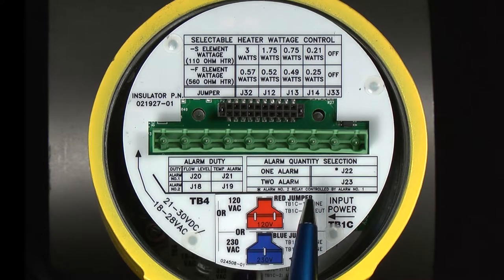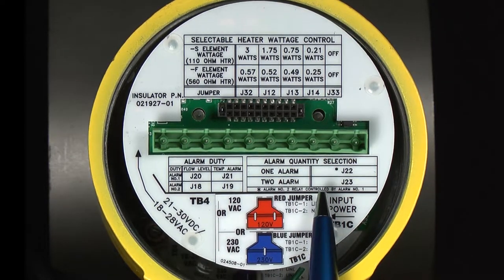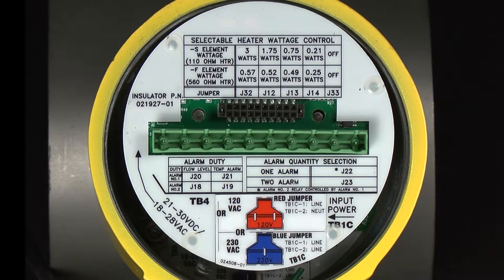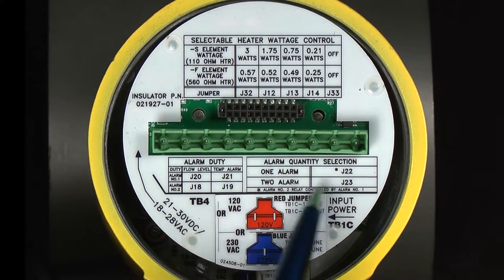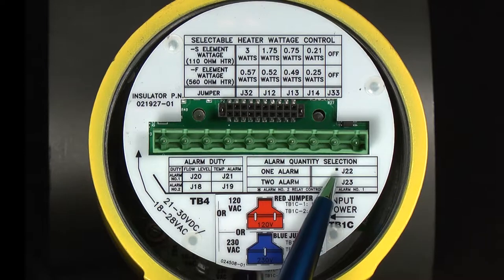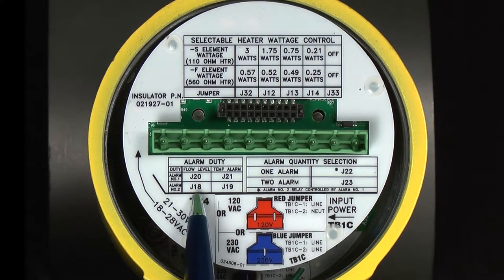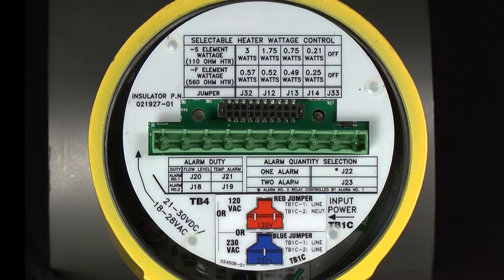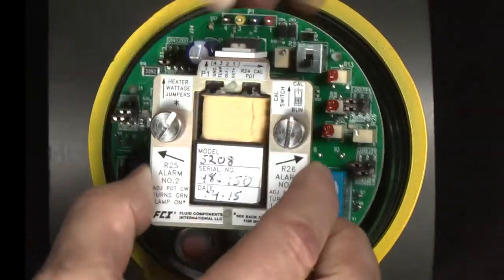The alarm selection, quantity selection section over here, is for determining if you're going to use two alarms or one alarm. There are six amp relays on the circuit board; they're of the form C type, which is the single pole double throw, and they can be set for flow, level, or temperature independent of each other. But if the double pole double throw relay configuration is required, you can use these jumpers to gang the two relays together so that they work simultaneously to control two discrete circuits. So J23 is to have two independent single pole double throw alarms, but if you want one double pole double throw relay, you would select J22. The alarm duty jumpers are used to set the purpose for each relay. For example, you can set both relays for flow or one for flow and one for temperature.